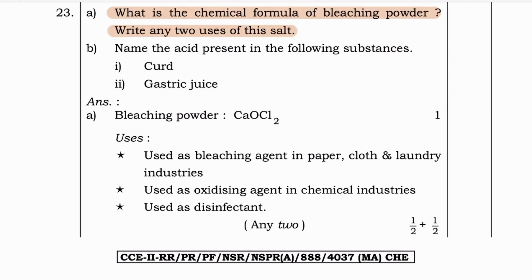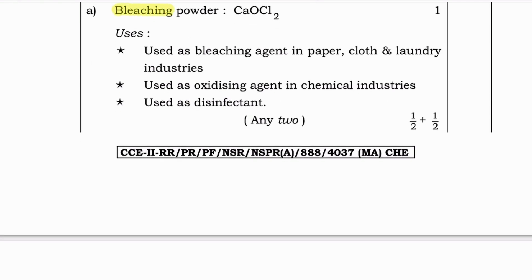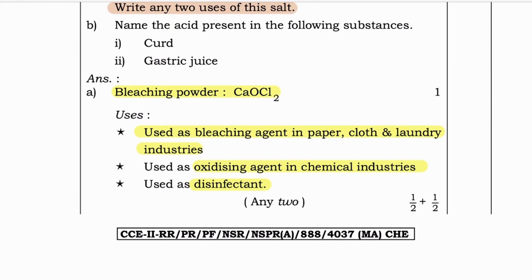Next question: What is the chemical formula of bleaching powder? Write any two uses of this salt. Bleaching powder: CaOCl2. Uses: it is used as a bleaching agent in paper, cloth, and laundry industries; and as an oxidizing agent in chemical industries and as a disinfectant.